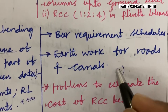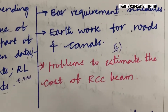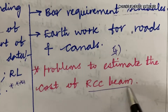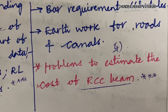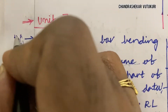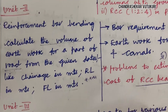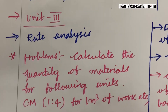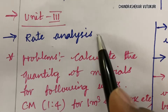The fifth question may again be a problem — related to estimating the cost of an RCC beam. They will ask a problem on RCC beam for a direct ten-mark question, which is a five-mark question from this part. This is all about Unit 2. Unit 3 is also about problems — it covers rate analysis.